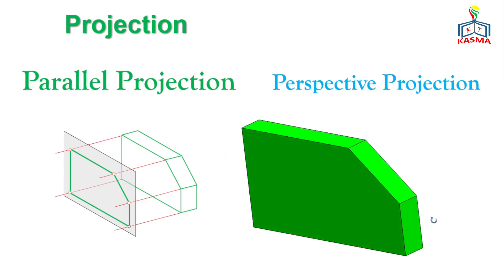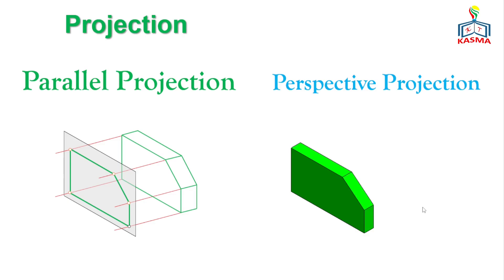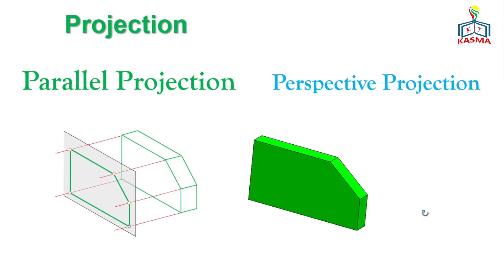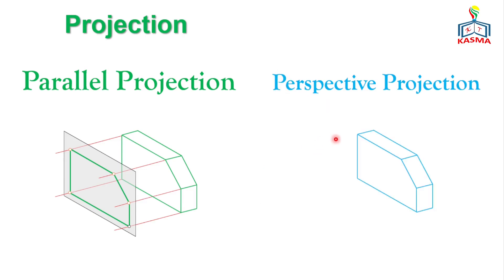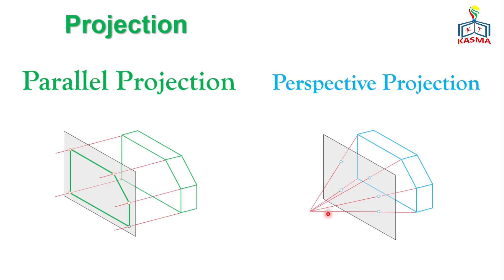In perspective projection, the lines of projection are not parallel to each other. Instead, they emit from the object and converge at one common point called the vanishing point. When constructing the view of the object from this direction, the resulting shape — shown in blue — is dimensionally diminished compared to the actual object size. This reduction in size is a key characteristic that distinguishes perspective projection from parallel projection.